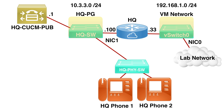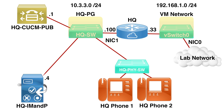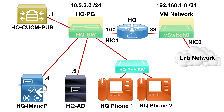Let's review the topology we were working with last time. We had installed Cisco Unified Communications Manager at 10.3.3.1, with HQ Phone 1 and HQ Phone 2. We want to add an IM and Presence server at 10.3.3.4 to our HQ port group, connected through the CSR1000V router. We also need a DNS server - the Jabber client wants to point to a domain name, not an IP address. We'll use a Microsoft Windows 2012 R2 server for DNS.